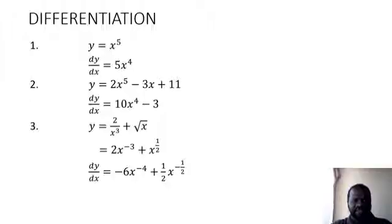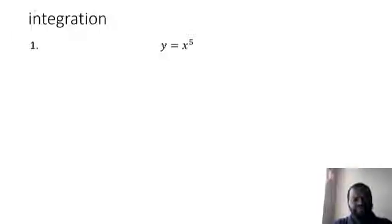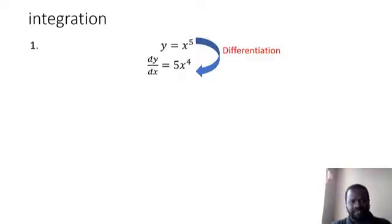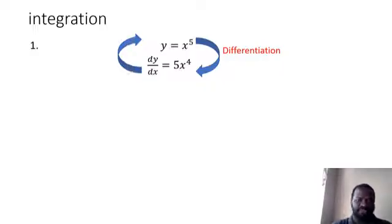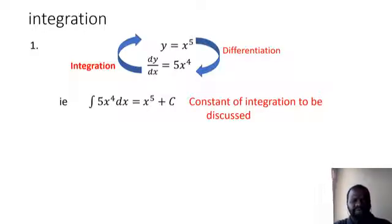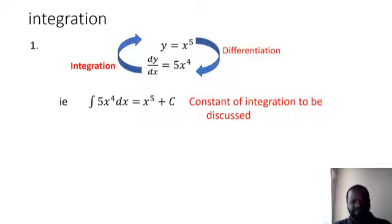For this same function, when you differentiate y = x exponent 5, that process is what we call differentiation. The opposite of that — coming from dy/dx going back to where you started — we call that process integration. So if you want to integrate the function 5x exponent 4, which is what you get when you differentiate x exponent 5, you just write x exponent 5 plus c.